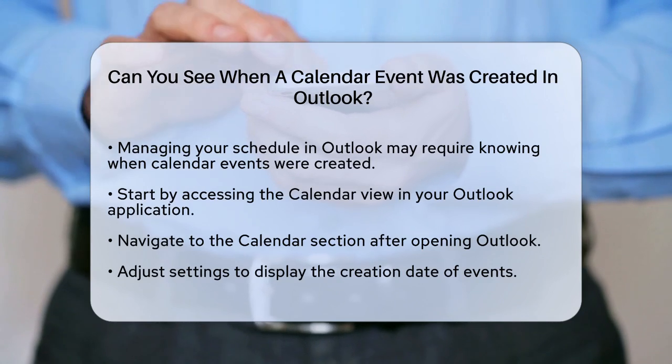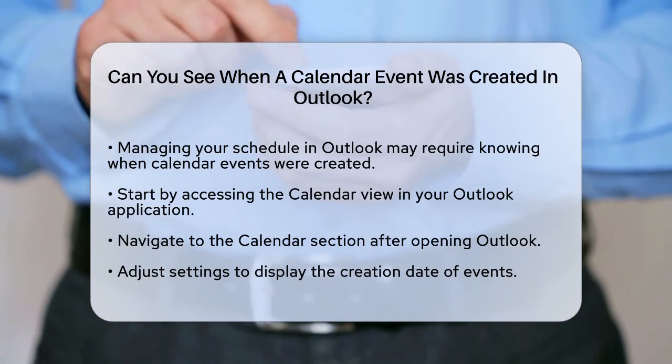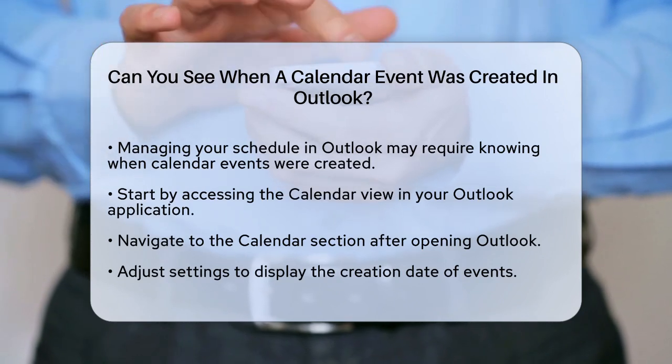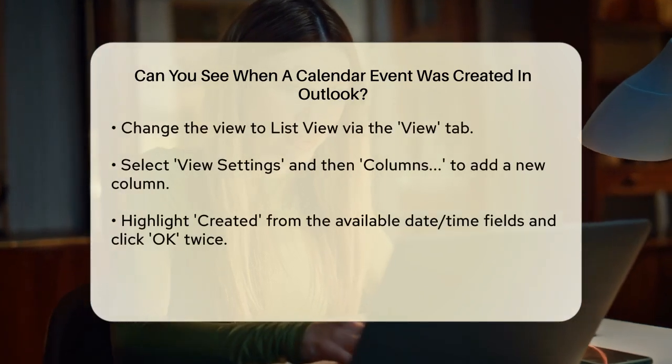Once you're in the calendar view, you need to adjust the settings to display the creation date. One way to do this is by changing the view to List View.